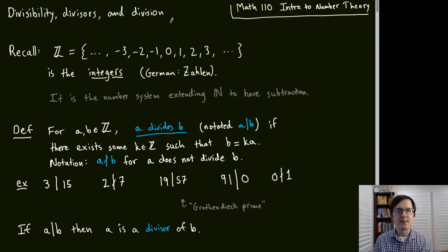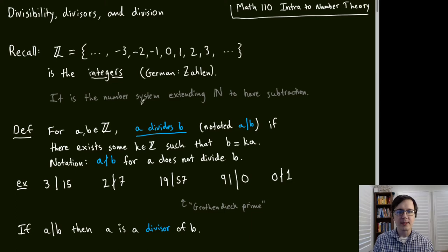Let's start by recalling what the integers are. The integers are the natural numbers along with all the negatives added in a formal way — the number system that extends the natural numbers to have subtraction. In a companion video we'll go into details about what that means. As a side note, the reason integers are denoted Z instead of I is that the German word for number is Zollen.